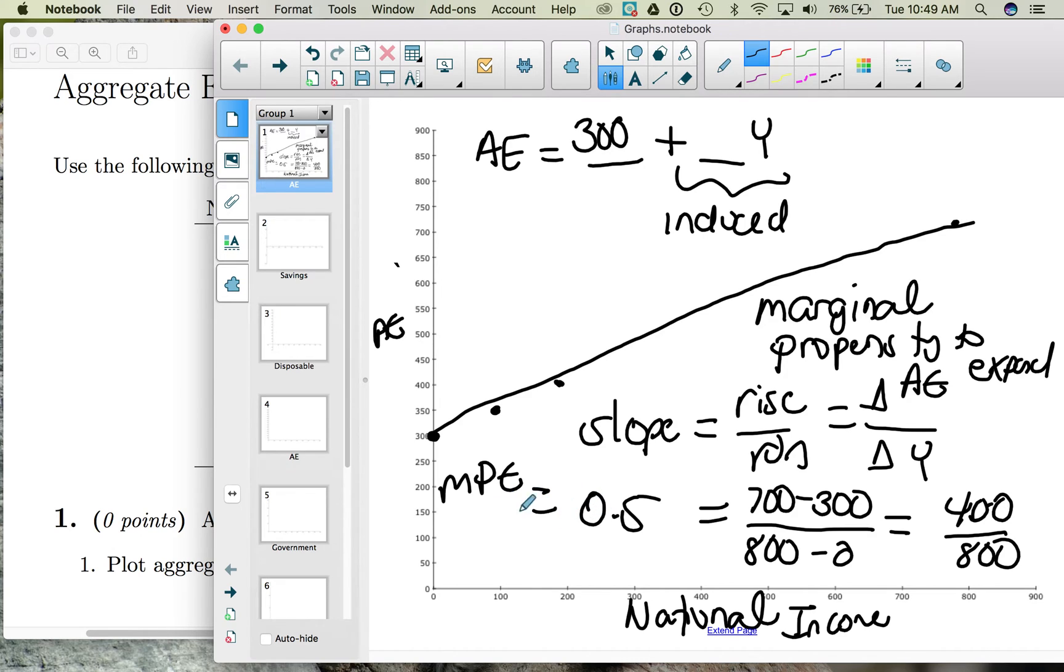So what this tells us is for every additional dollar of income in our society, the economy is going to spend 50 cents on itself. So our slope here is 0.5 and our total aggregate expenditures is 300 plus 0.5Y.